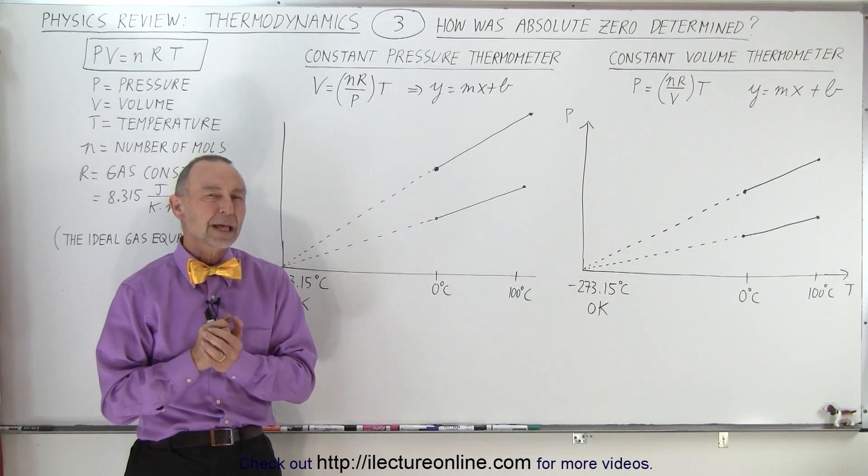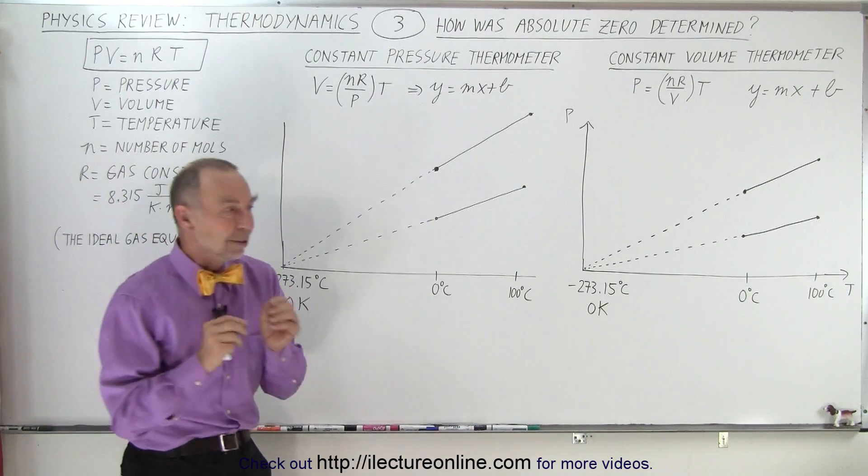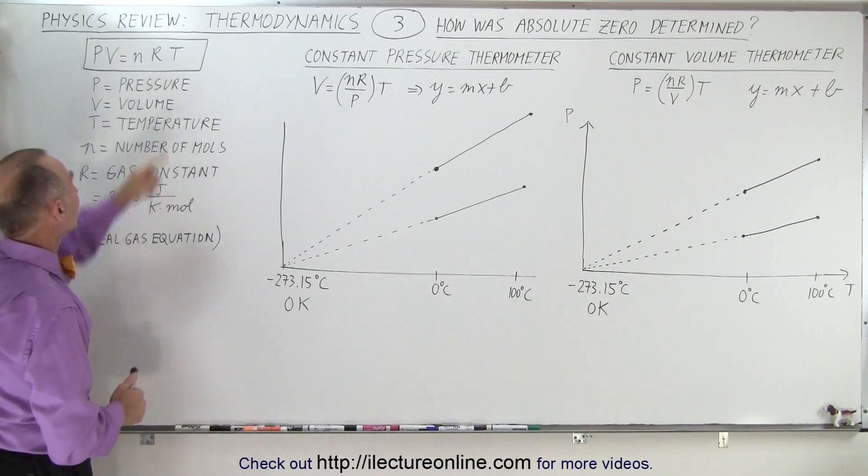Welcome to my Lecture Online. Now let's review how absolute zero was determined, and it points to the equation we know as the ideal gas equation, which is PV equals nRT.